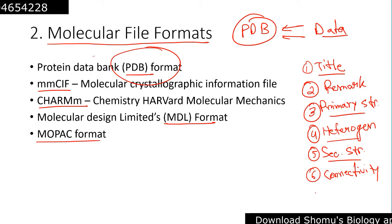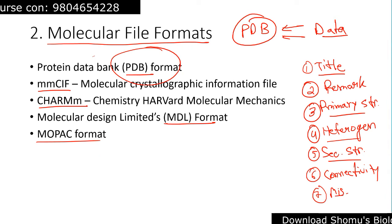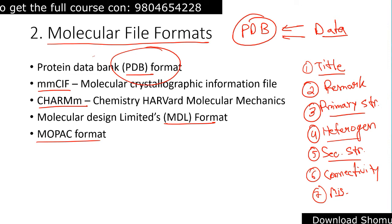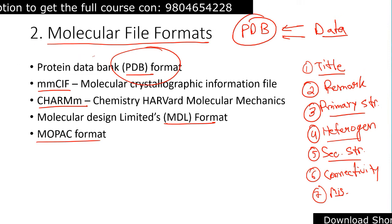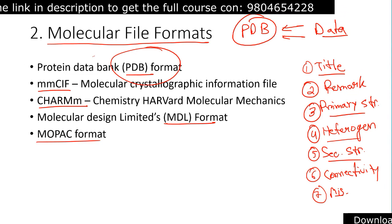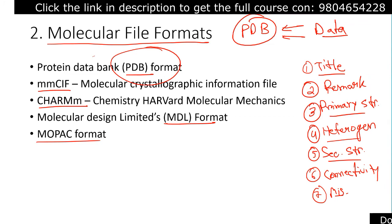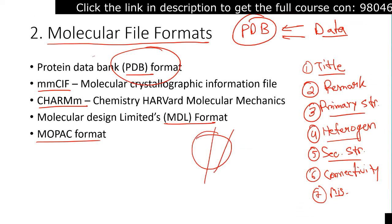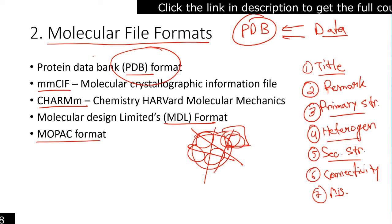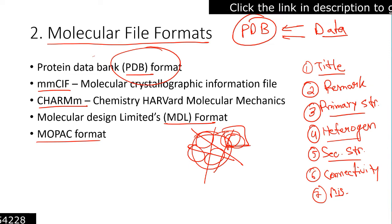At the end we have the miscellaneous section, which contains information about groups present in different active sites, cofactors, anticodons, and regulatory sections. Ultimately, we have the crystallographic and coordinate transformation section, which provides information on space groups — a concept from X-ray crystallography. In X-ray crystallography, the protein is viewed from different angles, each corresponding to a different space group, and the data from all angles is combined to get a complete picture of the protein structure.